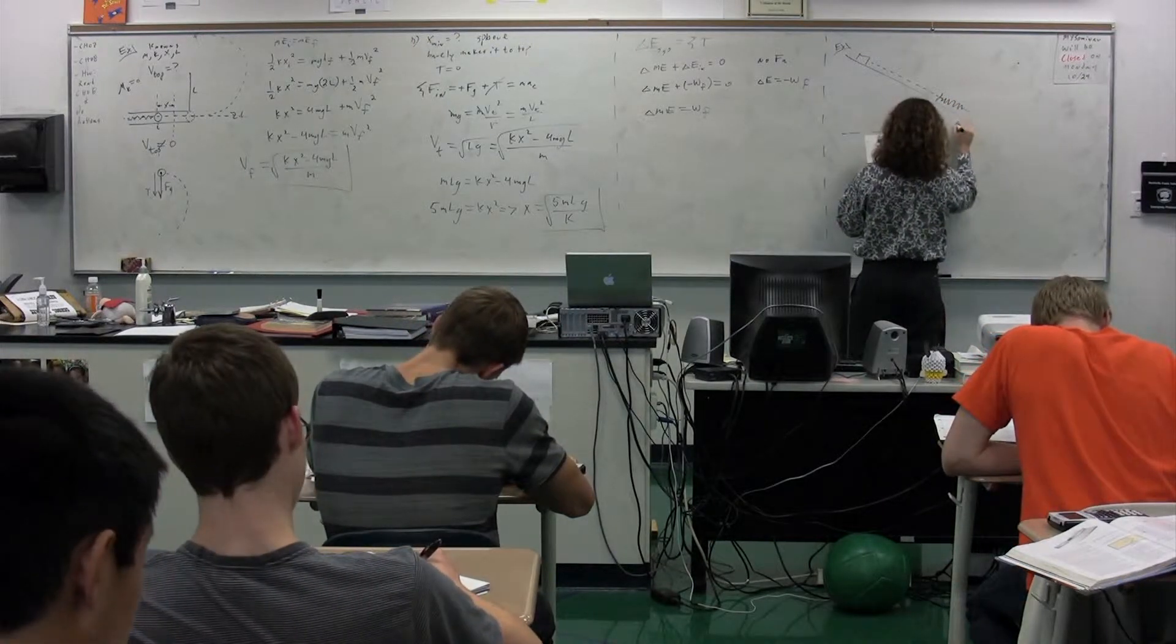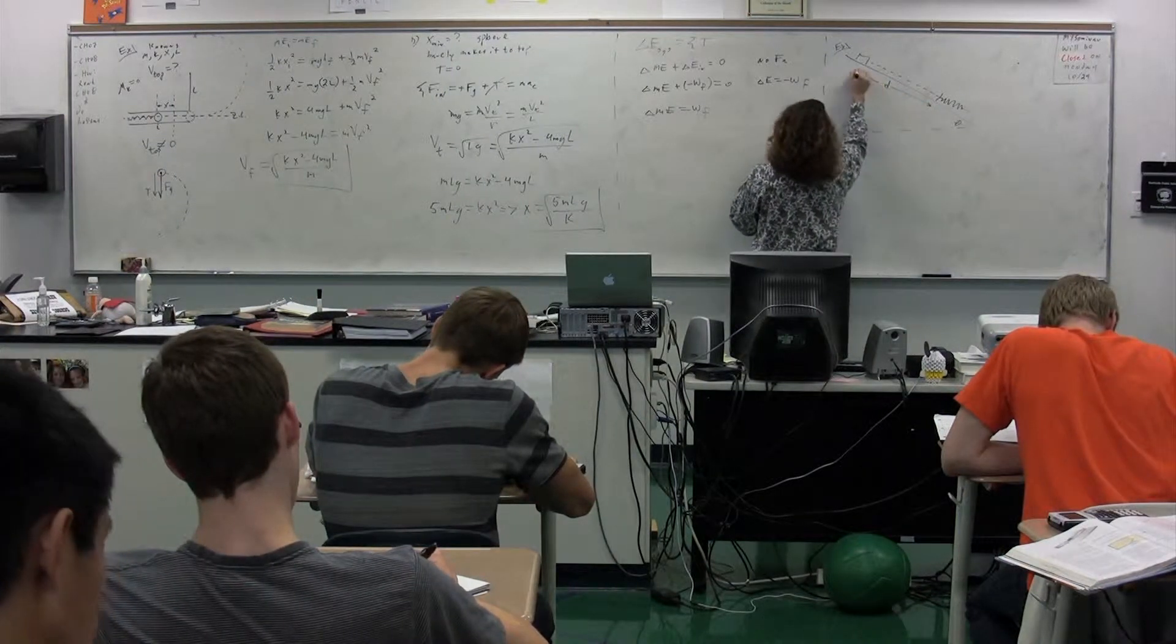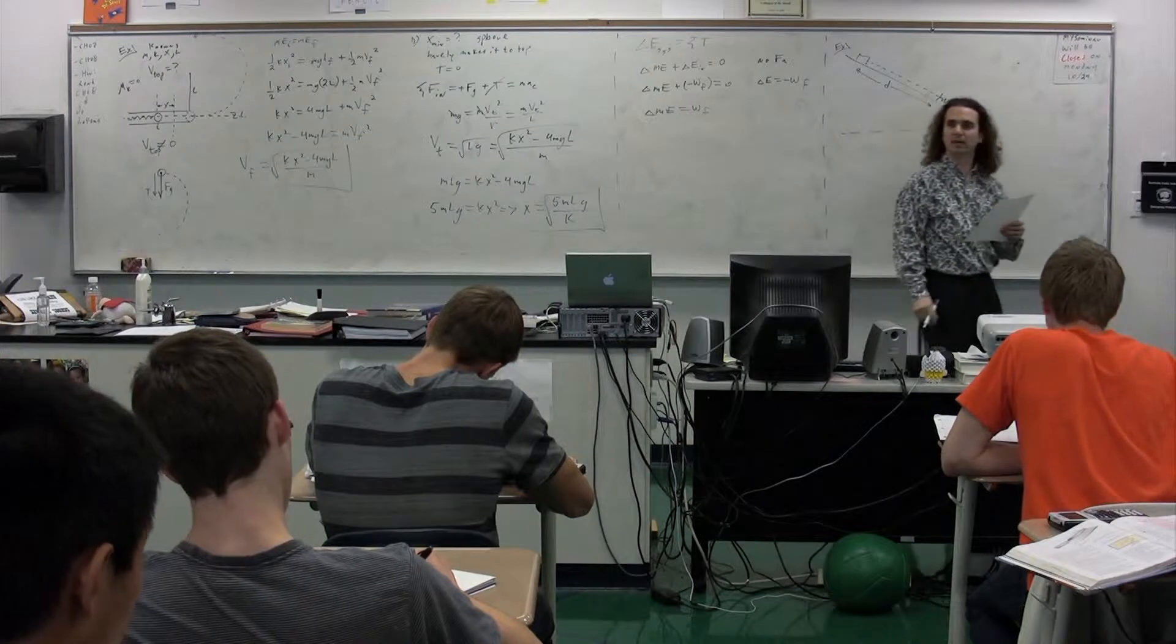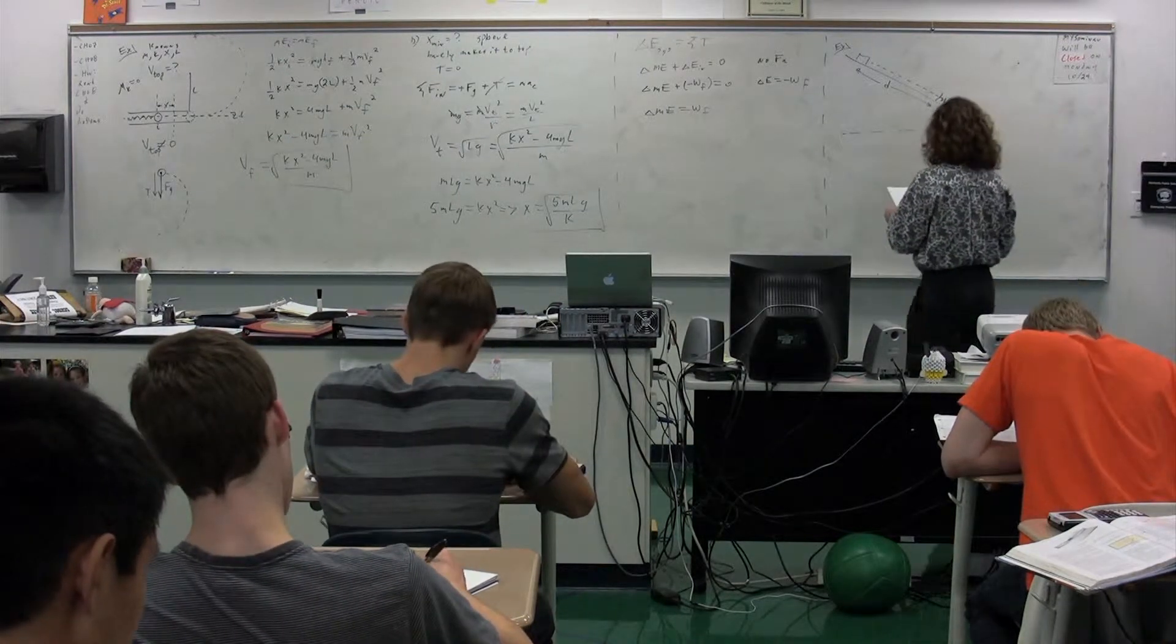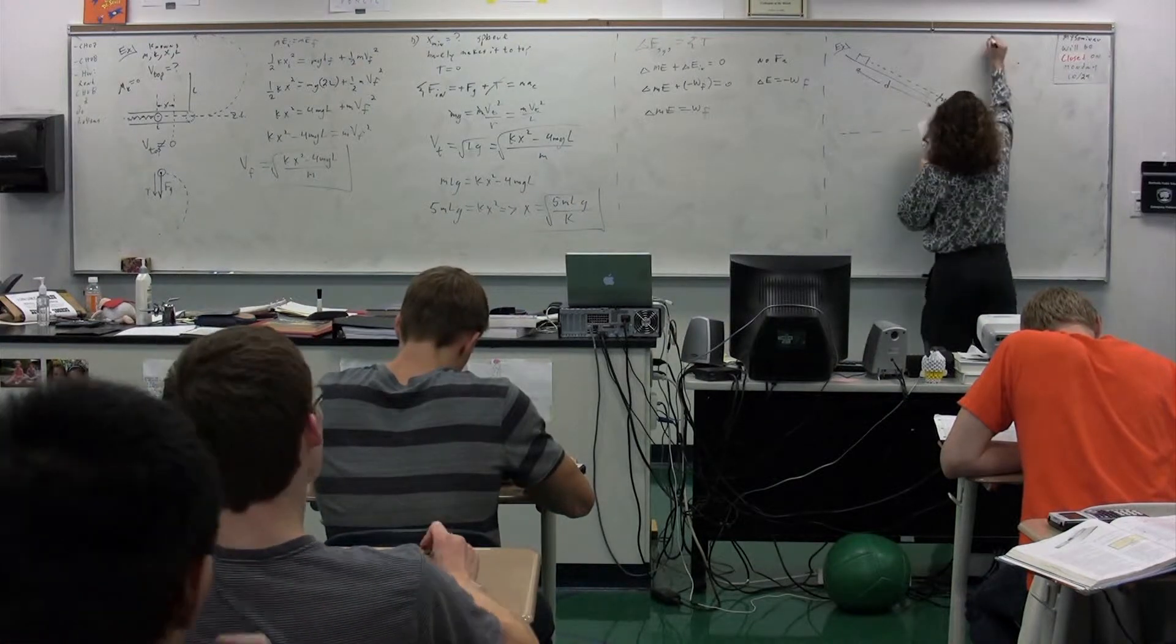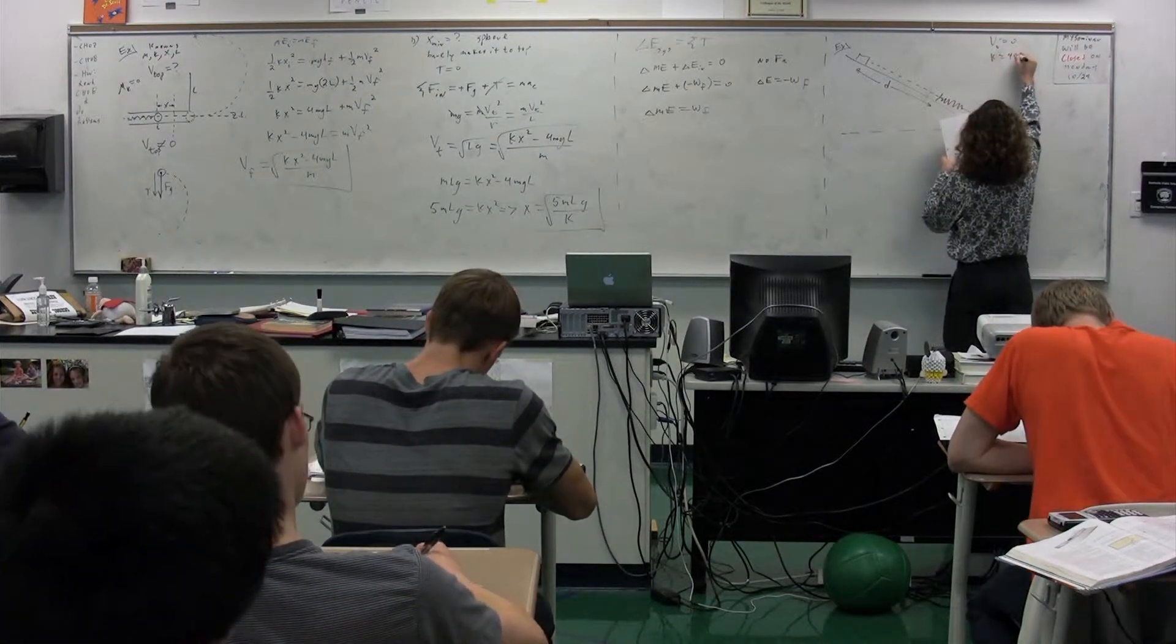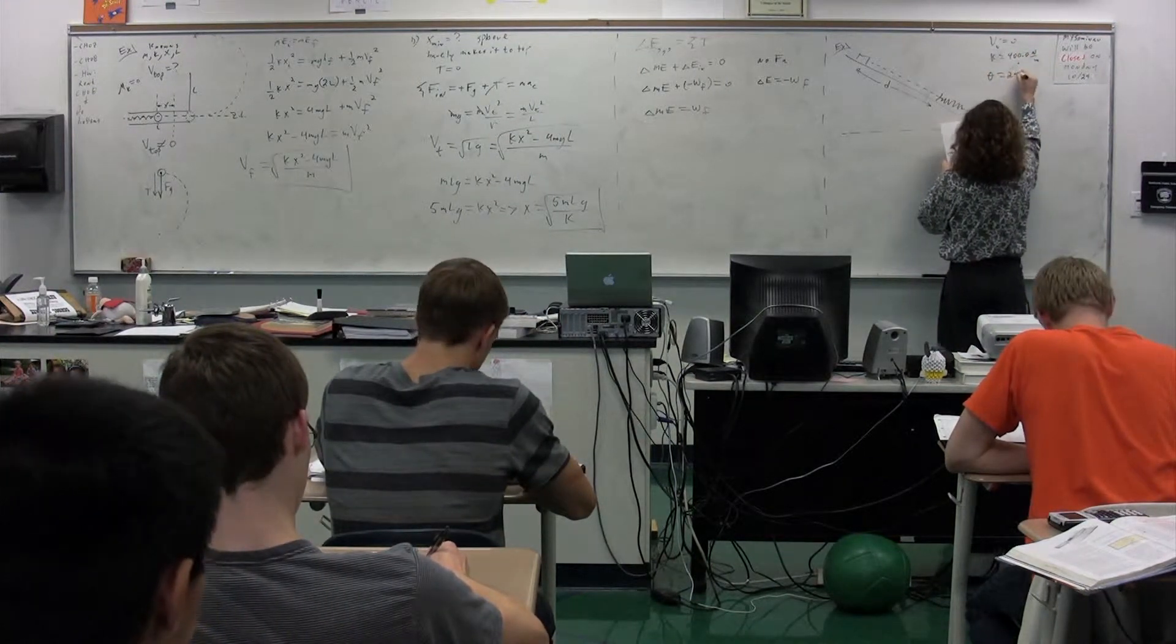The incline has a certain angle theta. The block is going to travel a distance d. Now notice the distance d is to the top of the spring. Distance d is to the top of the spring. And it's going to start with an initial velocity of zero. We're going to have a spring with a spring constant of 400.0 newtons per meter. The angle of the incline is 25 degrees.